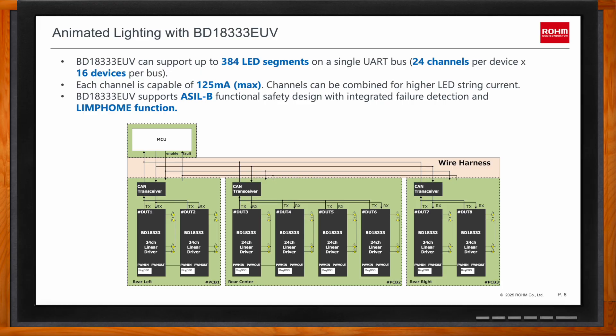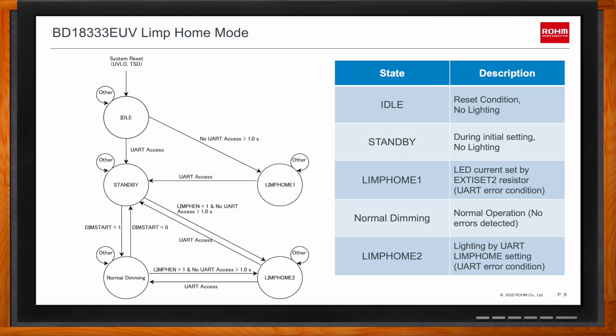You also talked about limp home mode earlier — what exactly is that? The BD18333 has a limp home function: if communication to the part is lost, it defaults to the limp home setting, which uses the external resistor XD Set 2 to determine what the LED dimming setting should be. This ensures some kind of lighting until the driver can get home or to an auto shop to repair the issue. This setting will vary depending on what the car manufacturer demands.